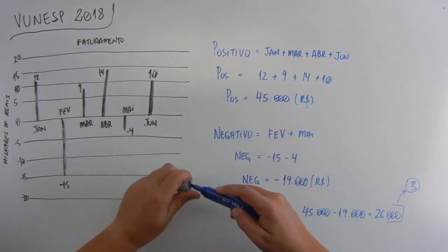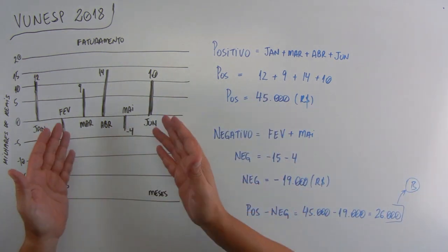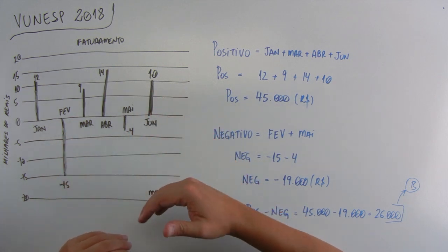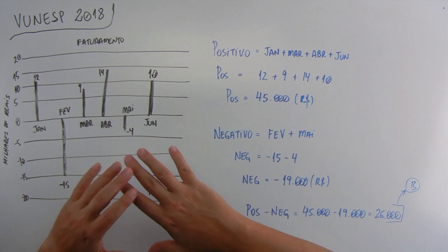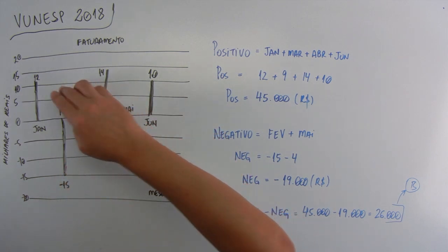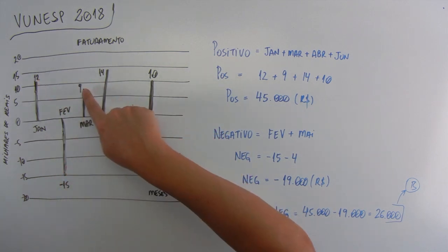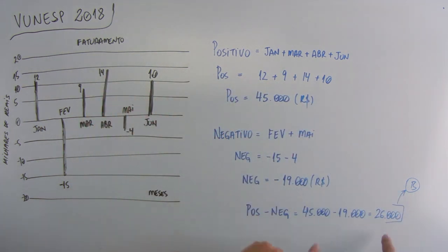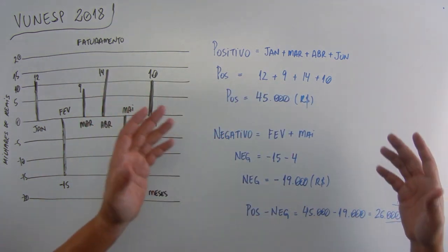Analisando o gráfico, facinho de resolver a questão. Na questão o gráfico está bem legal, dá para ver o que é positivo, dá para ver o que é negativo, os meses direitinho. E ele já colocou aqui a legenda de todos os valores para você não precisar ser aproximado. Porque deu um valor exato de 26 mil, alternativa B.